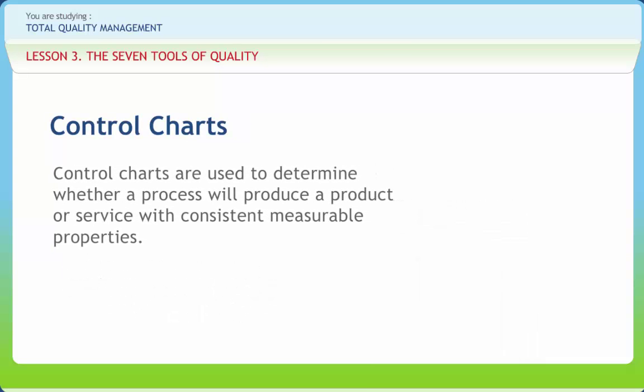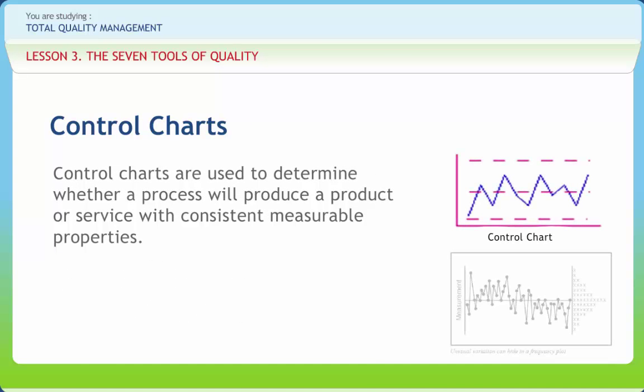Control charts are used to determine whether a process will produce a product or service with consistent measurable properties. The process for developing a process chart is the same for almost all charts. The statistical computations are what make it different and sometimes more complicated. Steps used in developing process control charts are: identify critical operations where inspection might be needed, identify critical product characteristics, determine whether the critical product characteristic is a variable or an attribute, select the appropriate process control chart.